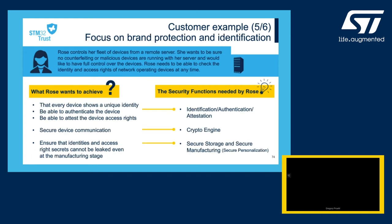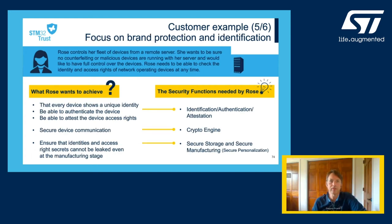Brand protection and product identification is our fifth example. Rose controls her fleet of devices from a remote server. She wants to be sure no counterfeiting or malicious devices are running with her server and would like to have full control over these devices. Rose needs to protect her devices by checking their genuineness with a unique identity personalized during manufacturing, check the access rights of the remote server operating the devices, and secure the data communication between her devices and the remote server.